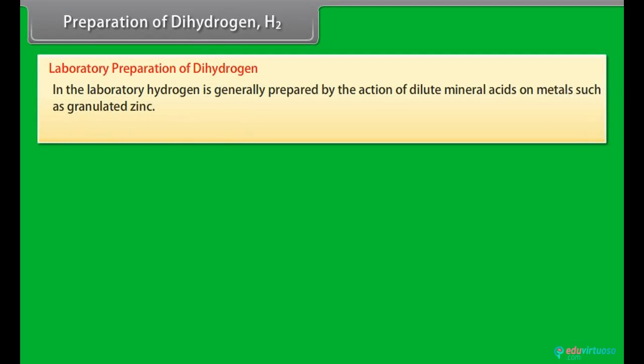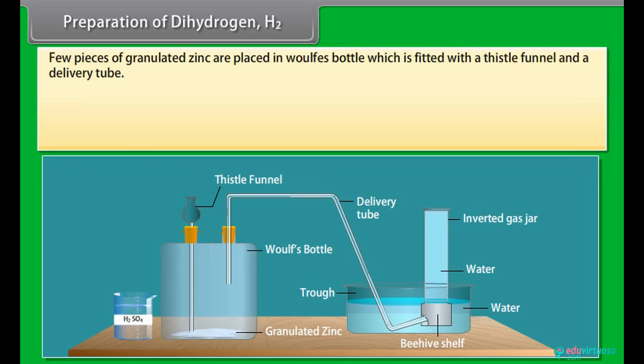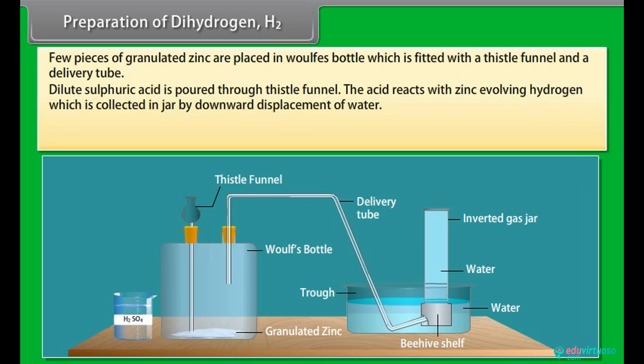In the laboratory, hydrogen is generally prepared by the action of dilute mineral acids on metals such as granulated zinc. Few pieces of granulated zinc are placed in a flask which is fitted with a thistle funnel and a delivery tube. Dilute sulphuric acid is poured through thistle funnel. The acid reacts with zinc, evolving hydrogen, which is collected in a jar by downward displacement of water.